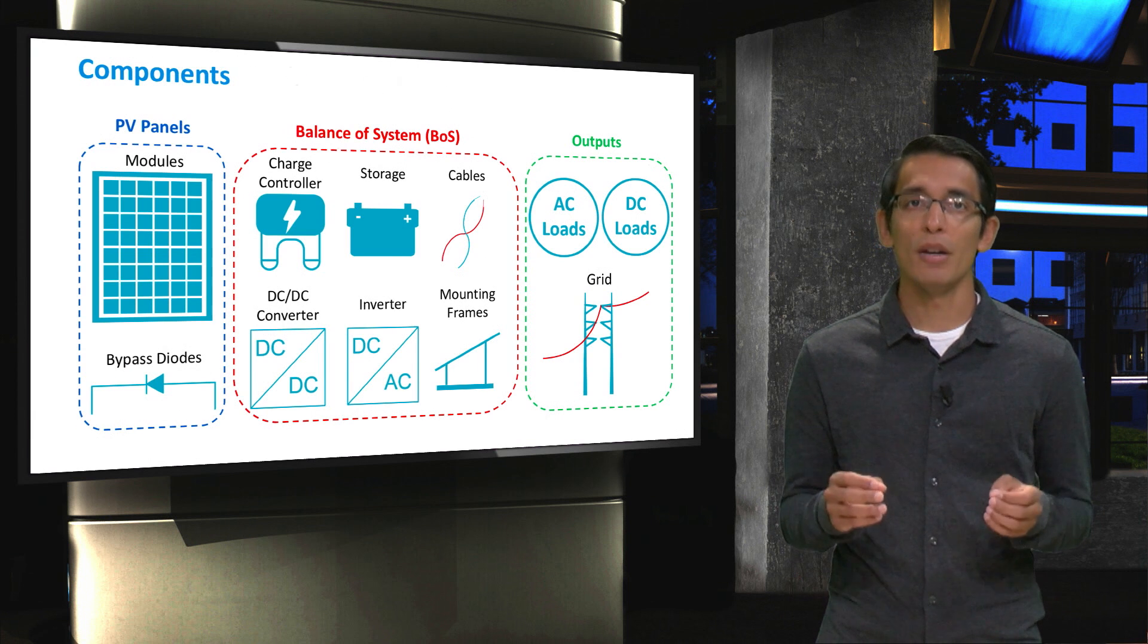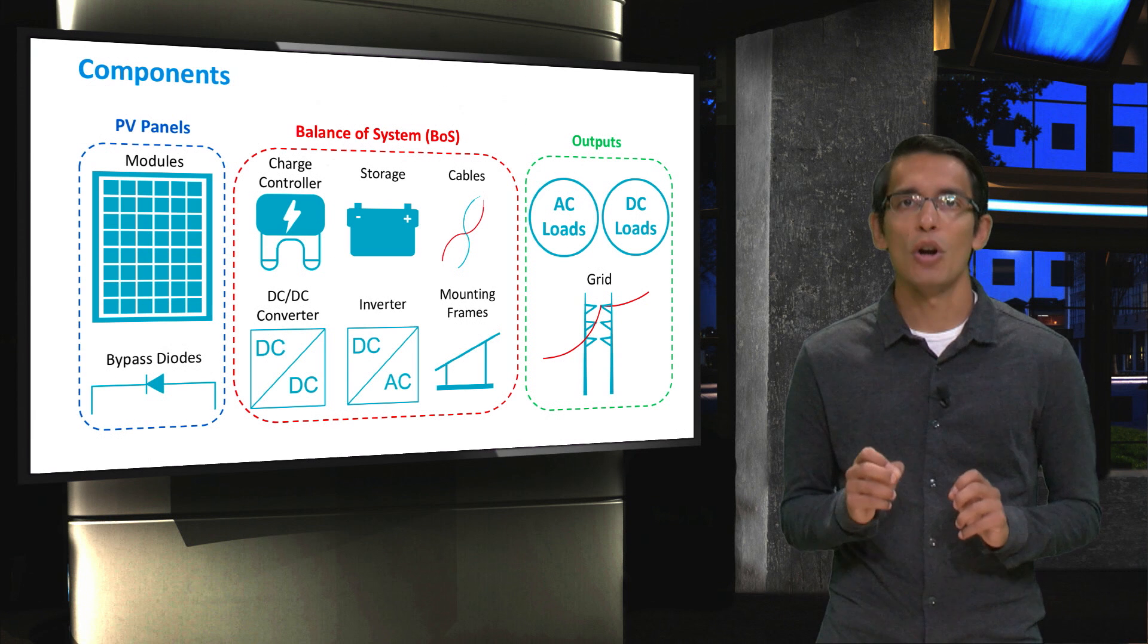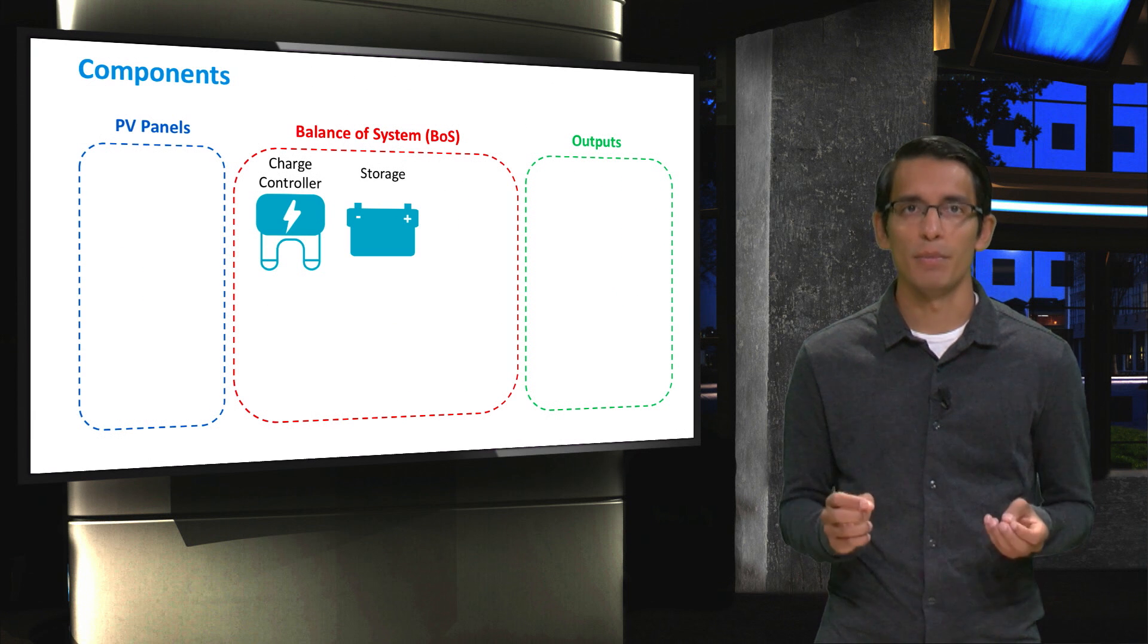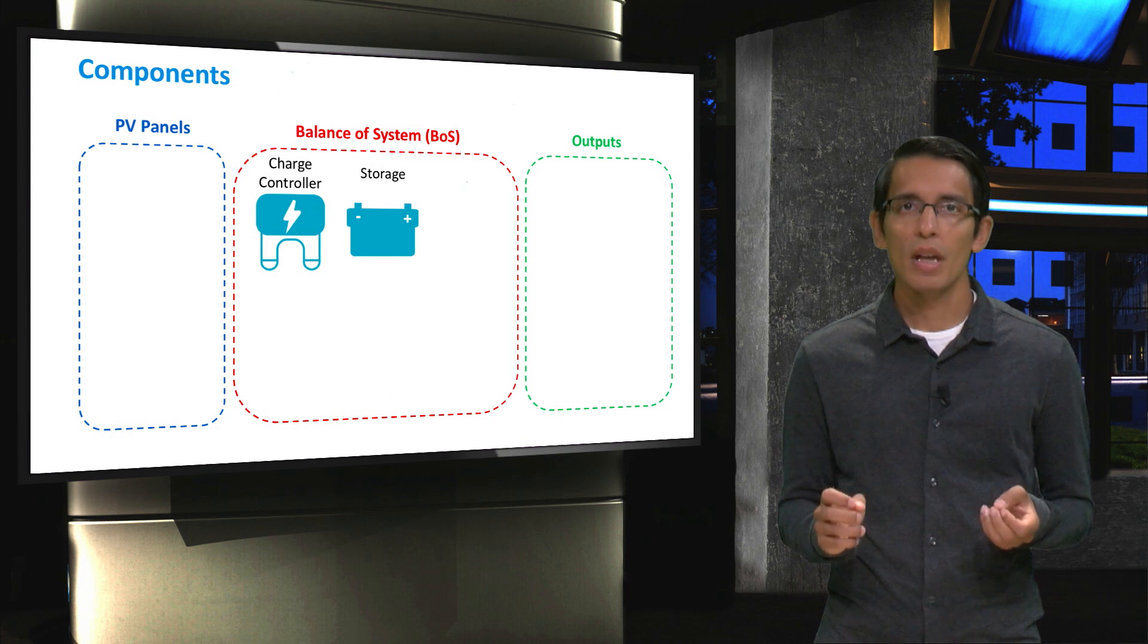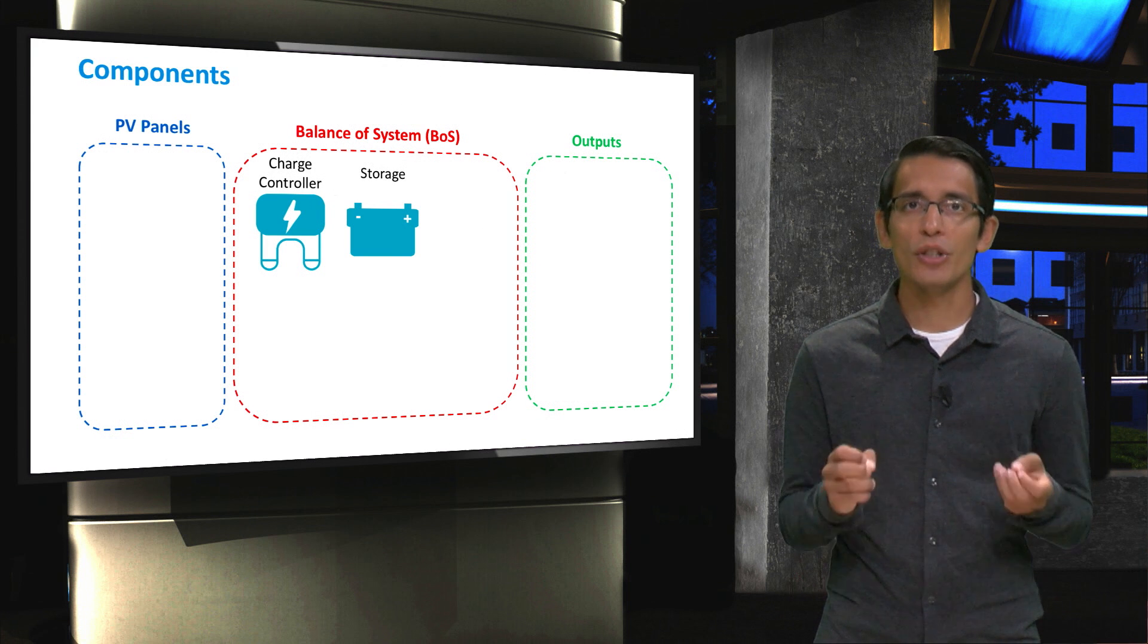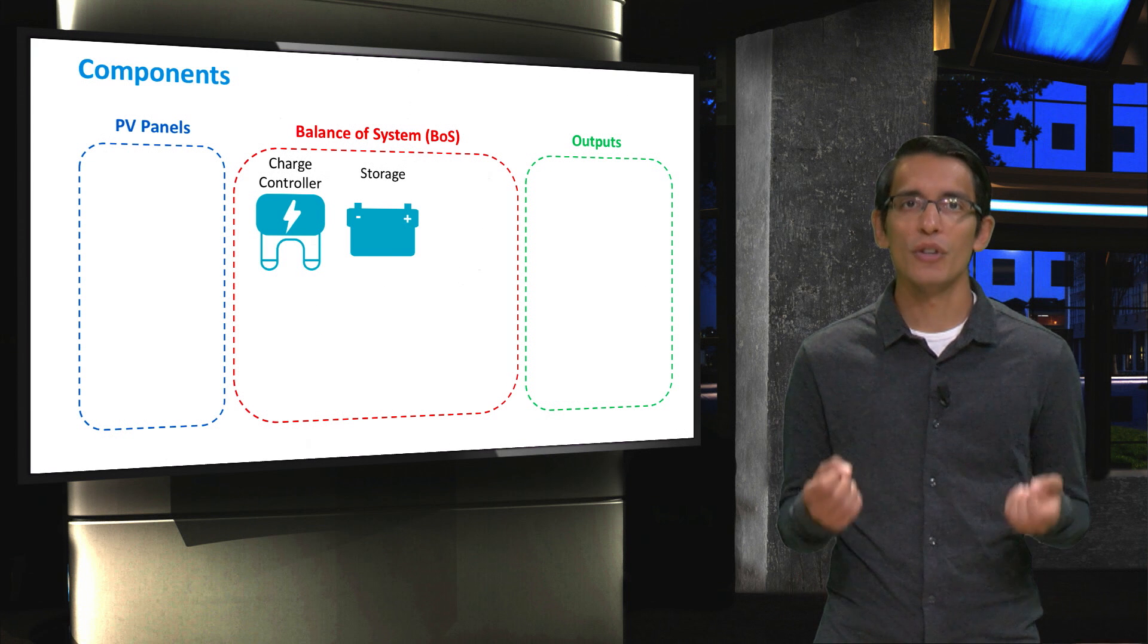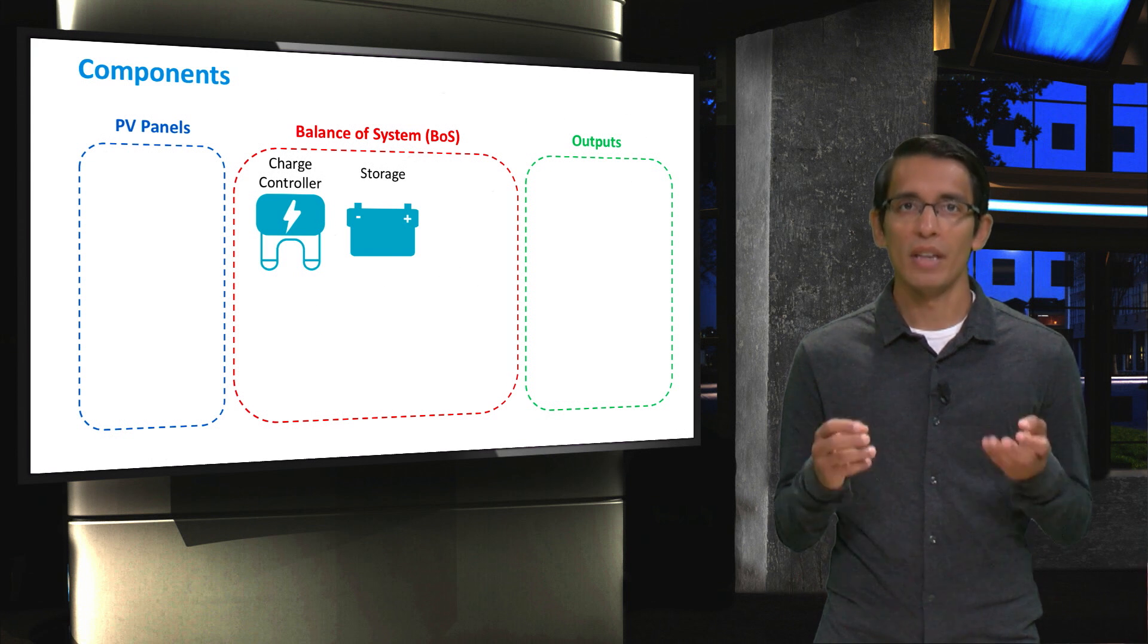Batteries are an essential part of certain PV systems. You can see here in our overview of components that batteries are part of the balance of systems. You may notice that I also include charge controllers in this slide. Since they are principally concerned with battery-connected systems, we will discuss them in this set of videos.